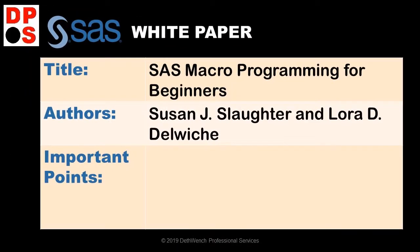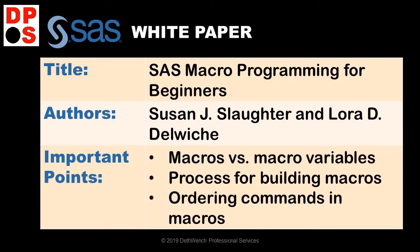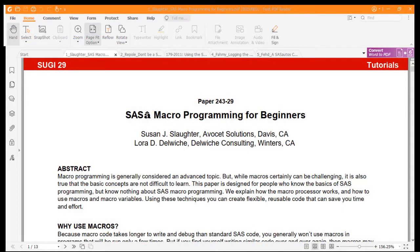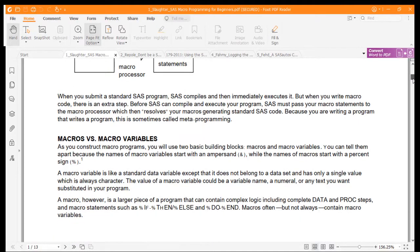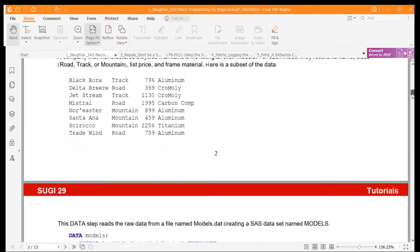The first white paper I want to highlight is SAS Macro Programming for Beginners by Susan Slaughter and Laura Delwiche. This is the main go-to paper I use for beginners when teaching about SAS macros. The paper covers very basic stuff about macros, the difference between macros and macro variables, how you need to use a process for building macros, and how to think about ordering your commands. It starts you off very simple and teaches you how to build your macro step-by-step.